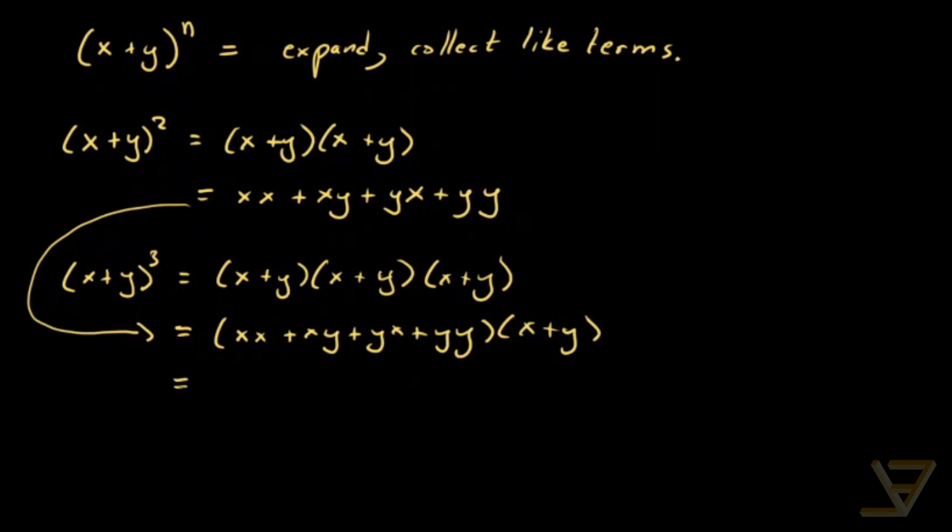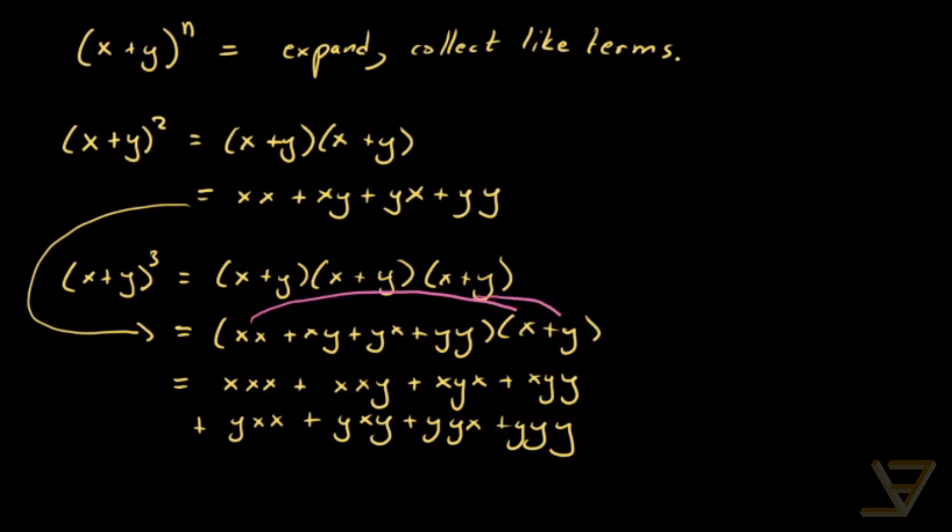And now we're just going to expand it again using the distributive law. So we get xxx plus xxy plus xyx plus xyy plus yxx plus yxy plus yyx plus yyy. And if you're wondering how I got that, just to be clear, I did these two terms and then these two terms. Then I did these two terms and these two terms. And I just kept going like that with this term and this term. So it's essentially using the distributive law.